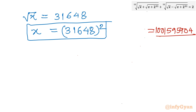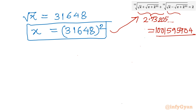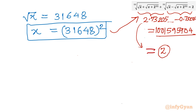You can cross-examine. If you put this value back, then a = 2.73205... and b = −0.73205... Taking a + b gives 2, which is our right-hand side. This confirms our solution is correct.